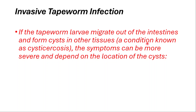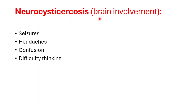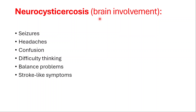This is a condition known as cysticercosis. The symptoms can be more severe and depend on the location of the cyst. Neurocysticercosis, which happens with brain involvement, causes seizures, headaches, confusion, difficulty thinking, balance problems, and stroke-like symptoms.